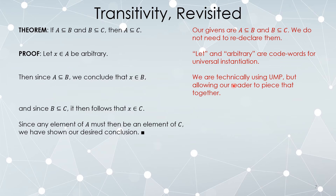We're technically using universal modus ponens. The given says: for anything in the universe, if it's an element of A then it's an element of B. And we're saying: since X ∈ A, it's an element of B. But we're not citing it as universal modus ponens — we just say 'since A ⊆ B, therefore we conclude this.' The reader thinks: anything in A is also in B, we have an element of A, therefore it's in B — they can put that together themselves. We do the same thing again: given any element in B it's in C, here's an element of B, therefore it's in C. But we don't write all of that out every time.